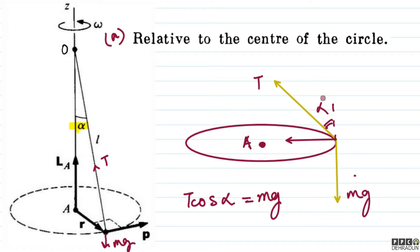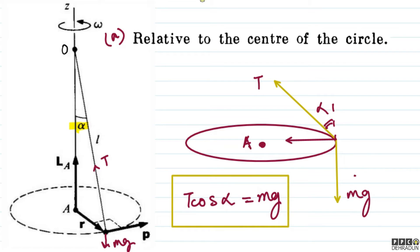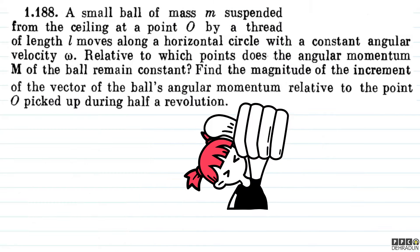The torque due to T cos alpha and the torque due to mg completely cancel each other out. So the net torque about point A — the center of the circle — is zero. This confirms that the angular momentum about the center of the circle is conserved.